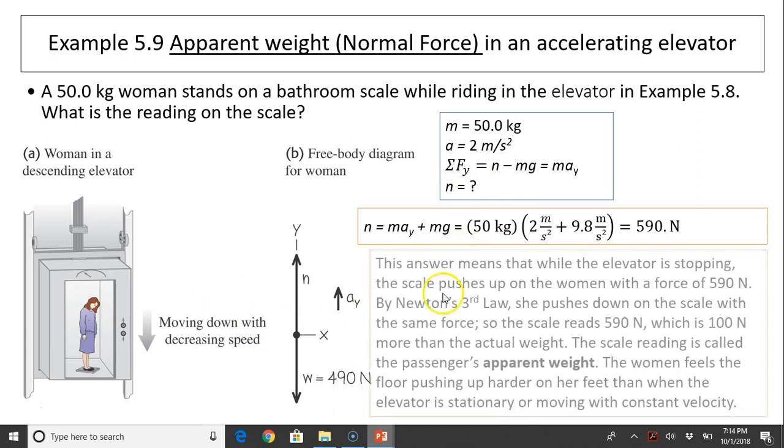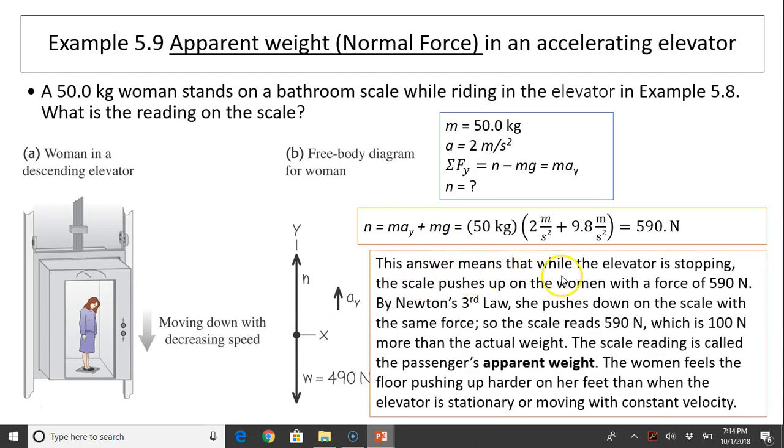Take a look, this N does not equal Mg. Does that make sense? This answer means that while the elevator is stopping, the scale pushes up on the woman with a force of 590 newtons. By Newton's third law, she must push down on the scale with the same force. That's why the scale's rating is 590 newtons, which is 100 newtons more than the actual weight. This scale reading is called the passenger's apparent weight. The woman feels the floor is pushing up harder on her feet than when the elevator is stationary or moving with constant velocity. She feels heavier when the elevator is accelerating upward.